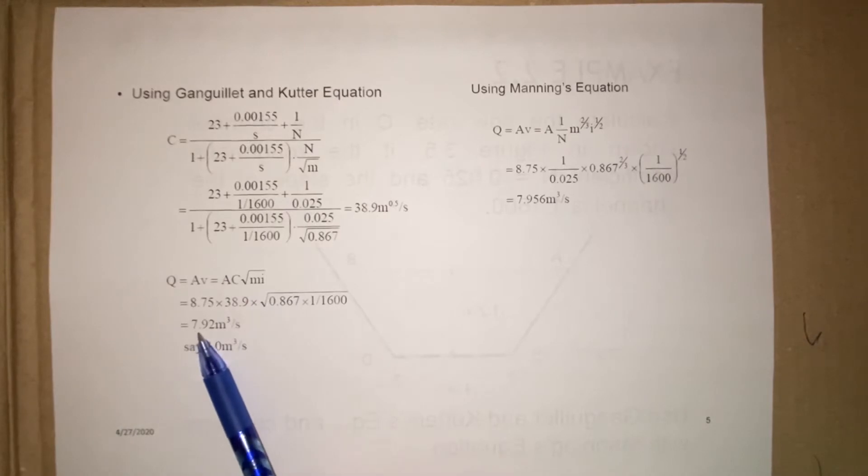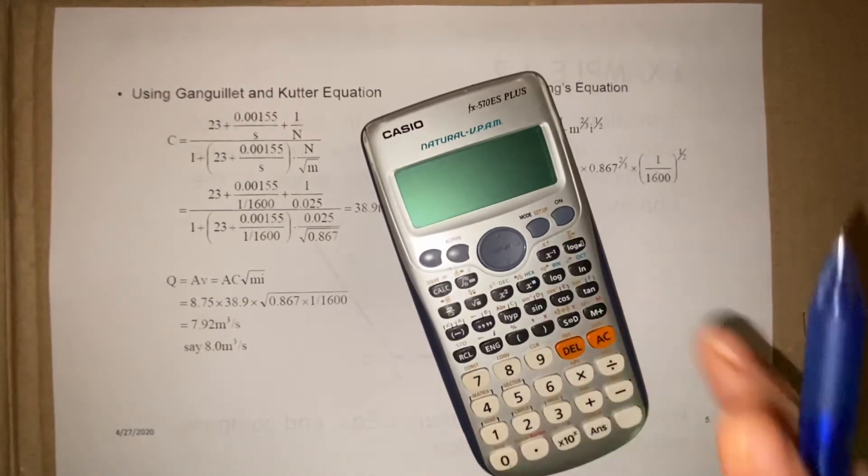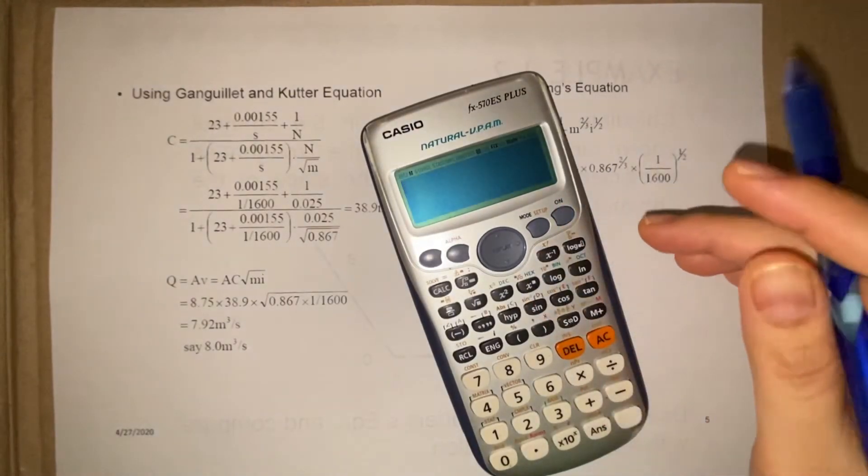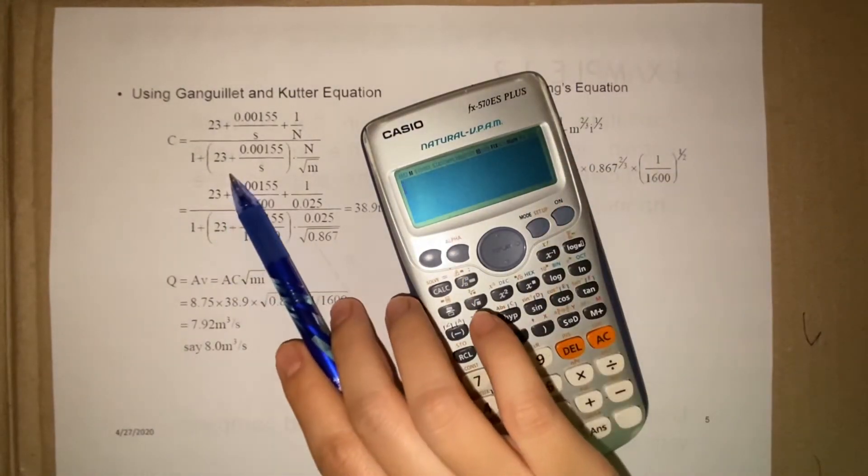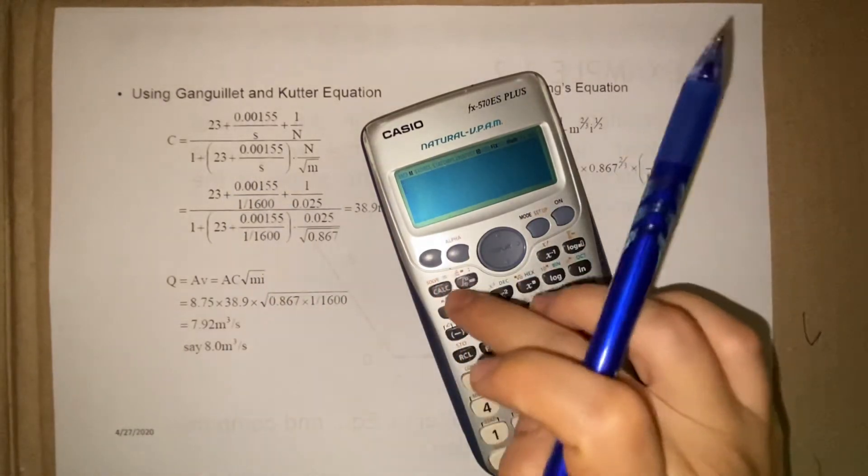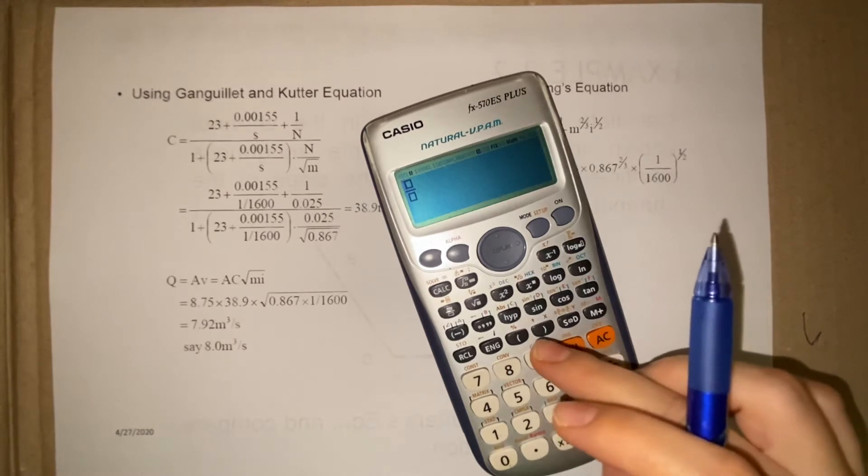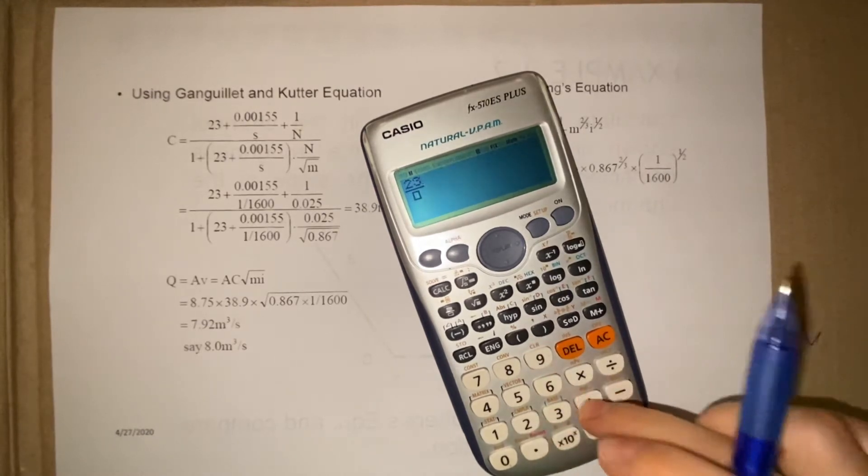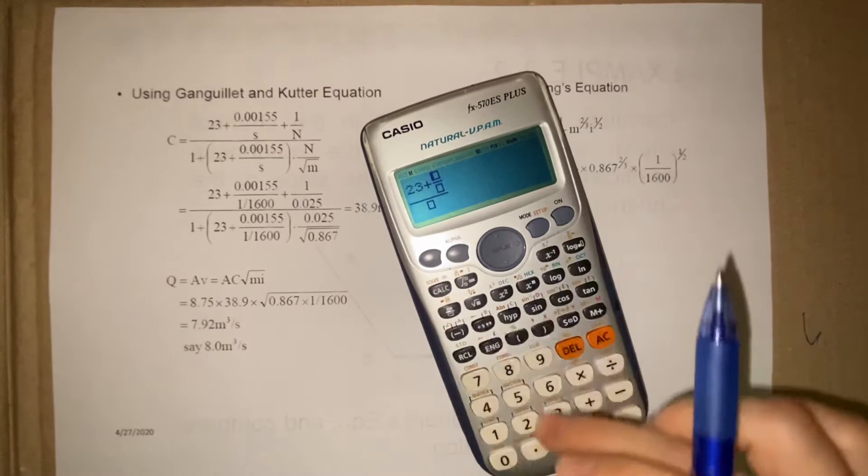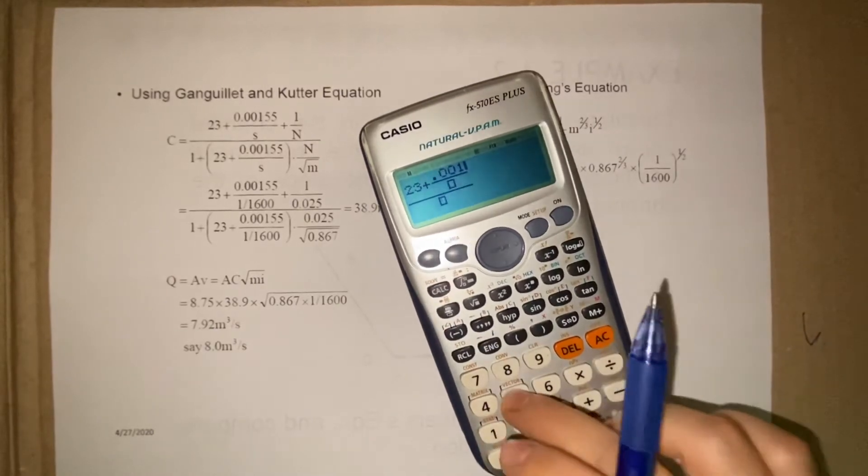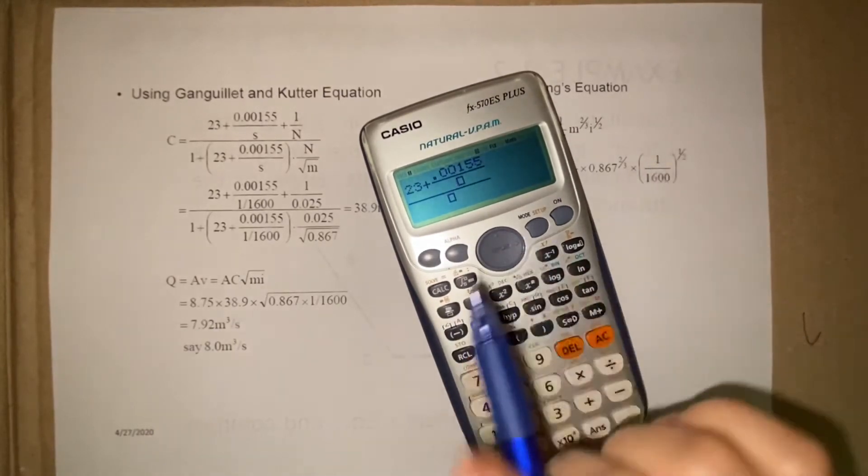And then after that we insert into formula Q equals to A times C times square root of M times I. And then you will get the answer. So we will use the calculator. How to calculate for C for Ganguillet and Kutter's. So we have 23 plus 0.00155 over S.